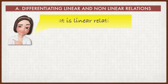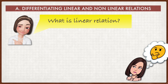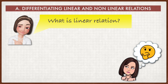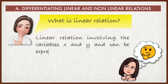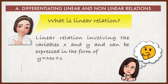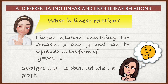What is Linear Relations? When we think about linear, Linear Relations involves the variables x and y and can be expressed in the form y equals mx plus c. A straight line is obtained when a graph of y against x is plotted.